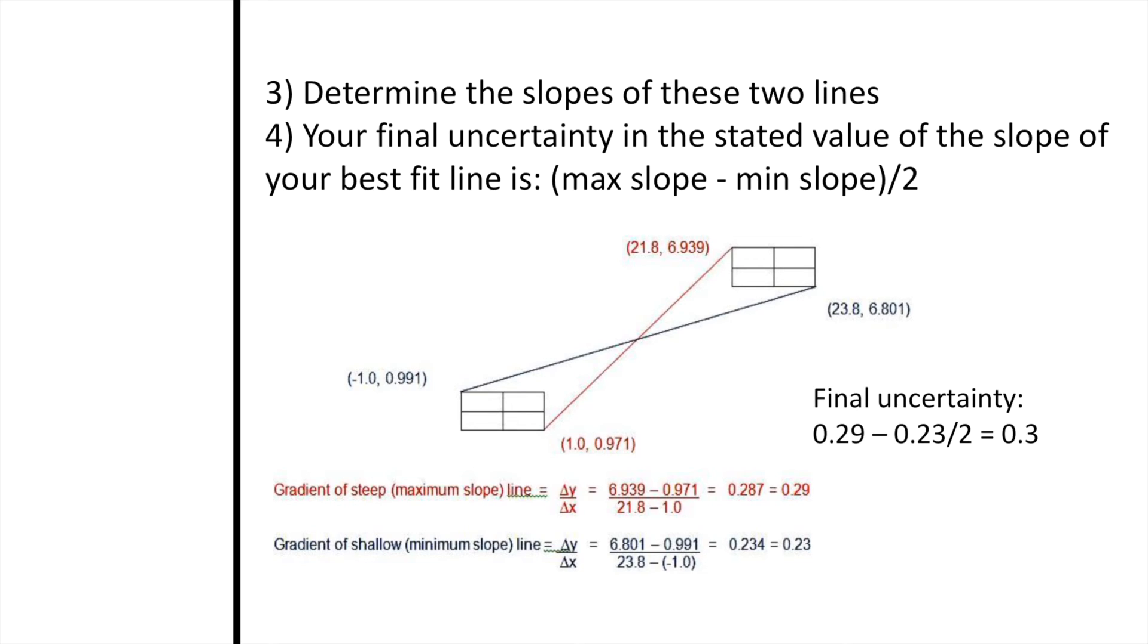For example, the coordinates in red show the maximum slope. When you take the difference of the final minus the initial y-values, we get 6.939 minus 0.971. The difference of the x-values is 21.8 minus 1.0. Solving for the slope, we get 0.287 equaling 0.29.